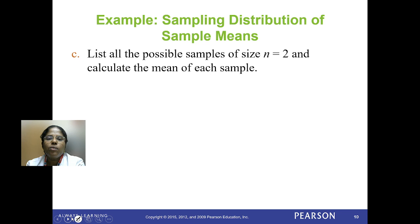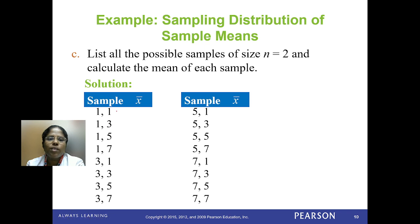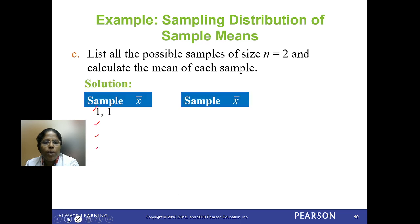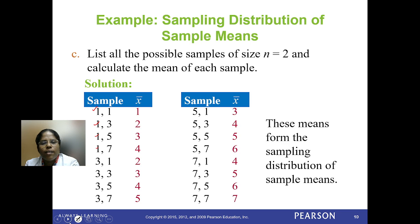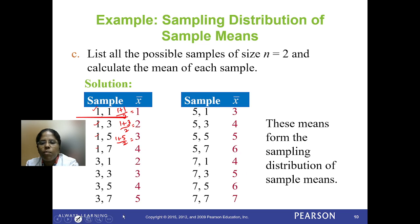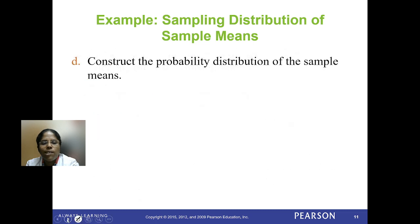Now I am going to find the sample means for each sample. We list all possible samples of size n=2 and calculate the mean of each sample. Picking 2 at a time, you can get combinations like (1,1), (1,3), (1,5), (1,7), and so on. The sample mean for (1,1) is 1, for (1,3) it is 2, for (1,5) it is 3, and so on for all combinations. These means form the sampling distribution of the sample means.